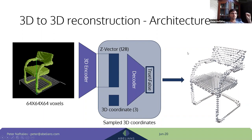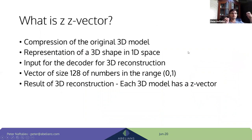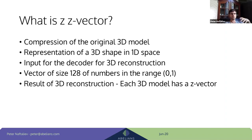The z-vector is important for several reasons. First, it serves as a compression mechanism for the original 3D model. It's also a 1D representation of whatever was in the 3D shape — encoding 3D information into a single vector of 128 numbers ranging from 0 to 1. Crucially, after building and training the 3D-to-3D reconstruction network, we won't only have trained weights — we'll also have a z-vector per model from training.